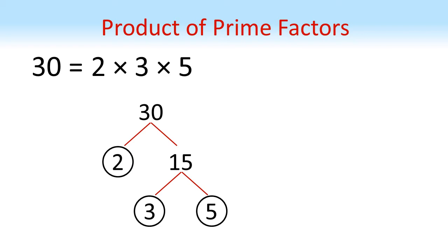Now as I said at the beginning, we could have chosen any pairing that would multiply together to give 30. For example, we could have gone with 3 and 10 and then split the 10 into 2 times 5, but we'd still get exactly the same answer, a 2, a 3 and a 5. So 30 as the product of prime factors is 2 times 3 times 5.